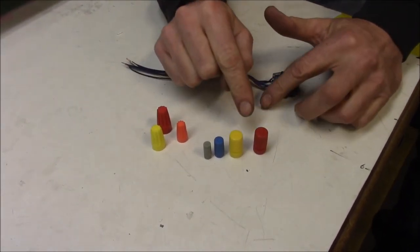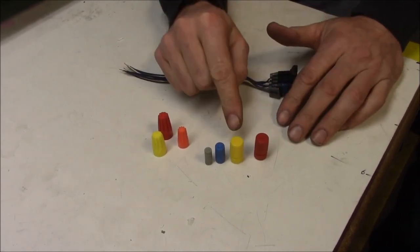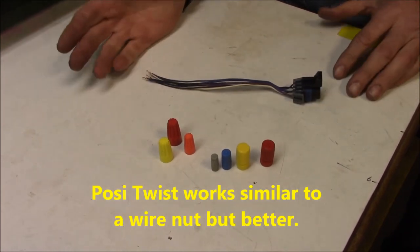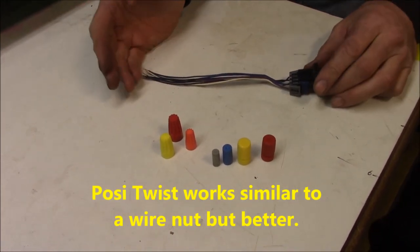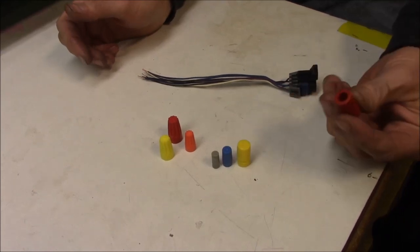Okay, so these are something called Posi Twists, and they come in different sizes. Now, for you guys that have worked on stuff before, the comparison to a Posi Twist would be a wire nut - like you use wire nuts in your house. You don't want to use wire nuts on your motorcycle; they'll vibrate and come loose. But to give you an idea of what a Posi Twist is, that's exactly it.